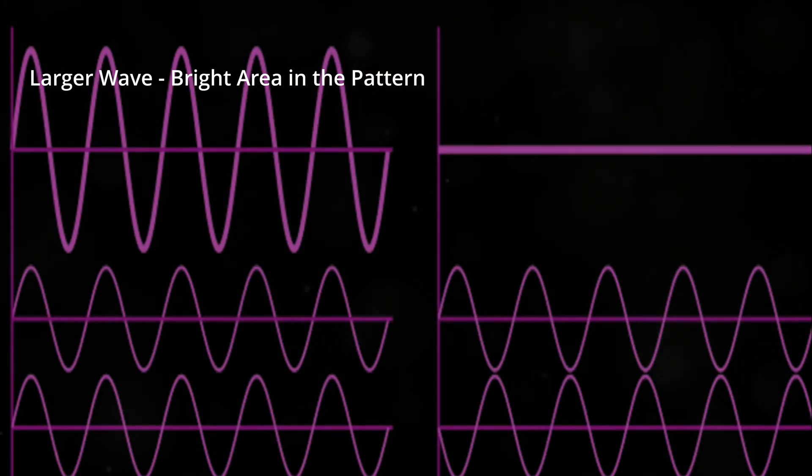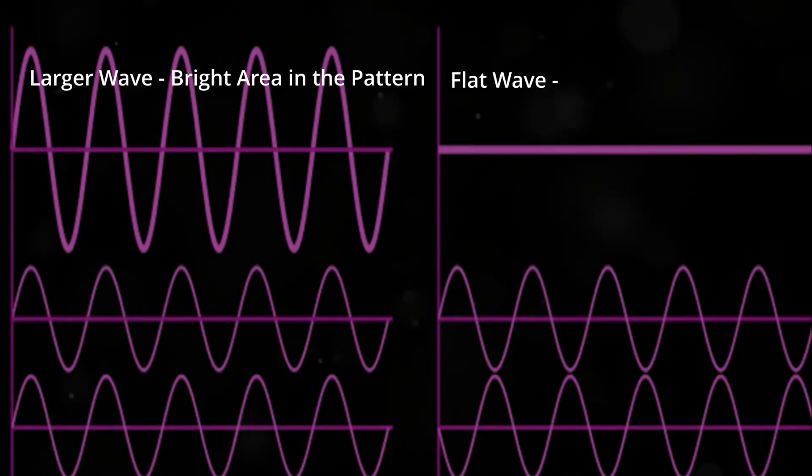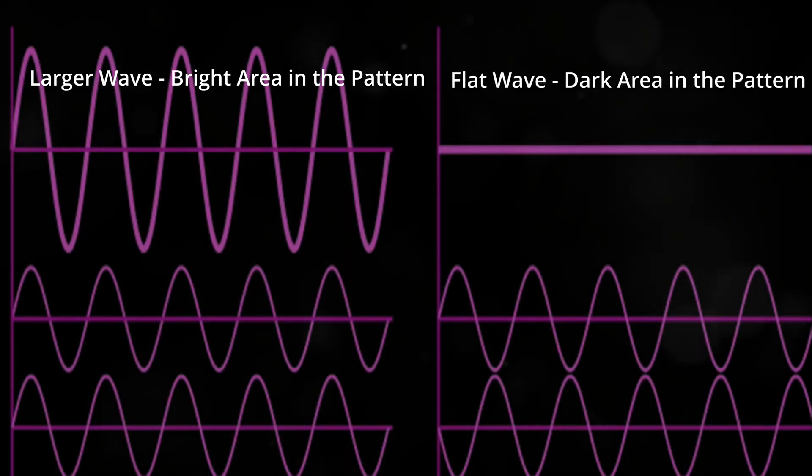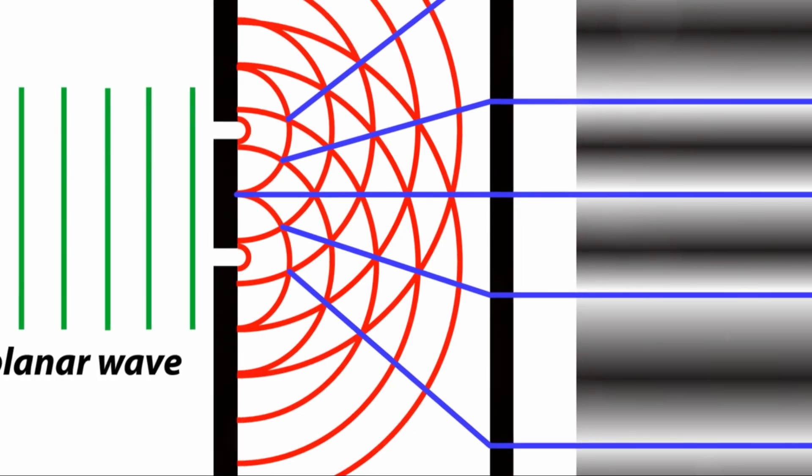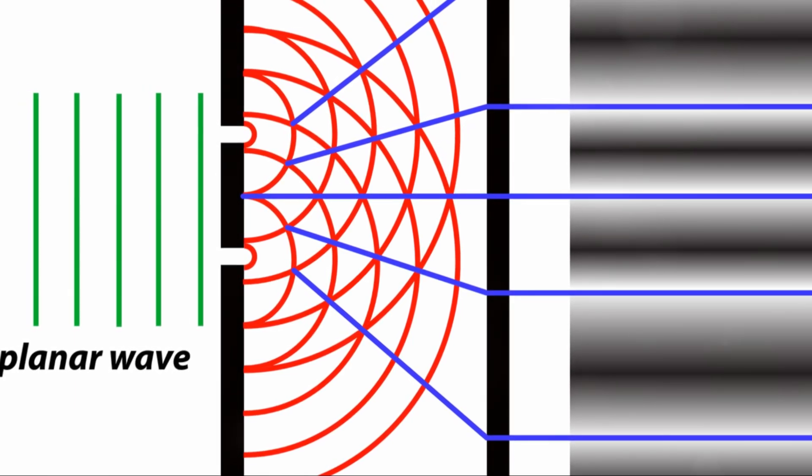But when the high point of one wave meets the low point of another, they cancel each other out, creating flat areas like the dark regions in the pattern. Young's experiment showed that light does exactly the same thing. It looked like light was definitely a wave. So problem solved, or so it seemed.